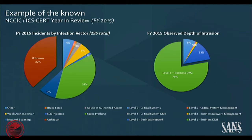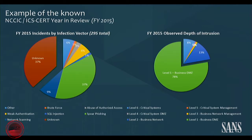I pulled these from the 2015 year in review. The 2014 year in review is the exact same in the construct — the number one attack vector, the number one infection vector, is unknown. The number two is spear phishing, which would make a lot of sense if we had email servers in SCADA environments, but we don't.